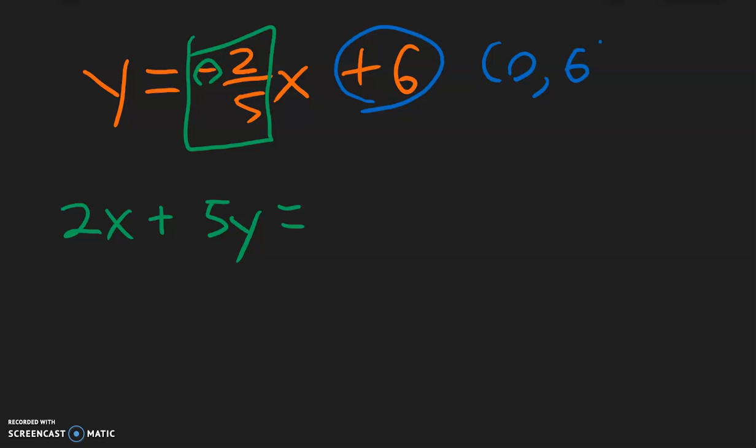The y-intercept is going to be 0, positive 6, so plug in the same, we have 2 times x, 2 times 0, plus 5 times y, which is 6. So 2 times 0 is 0, 5 times 6 is 30, 0 plus 30 is going to be 30, and this is going to be our equation.